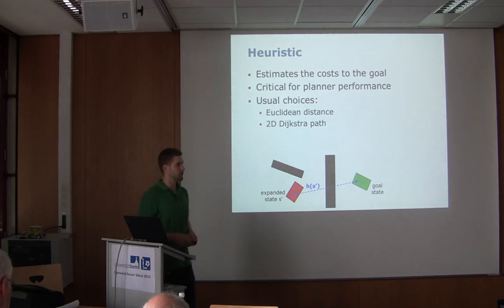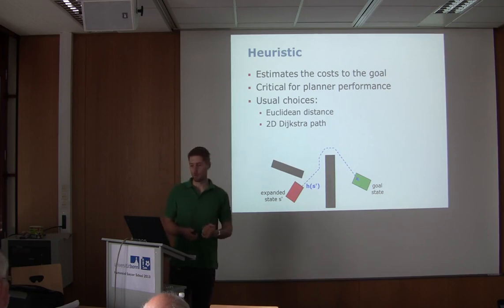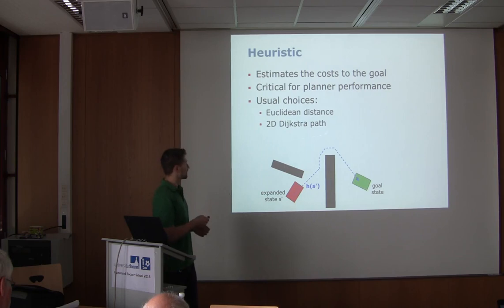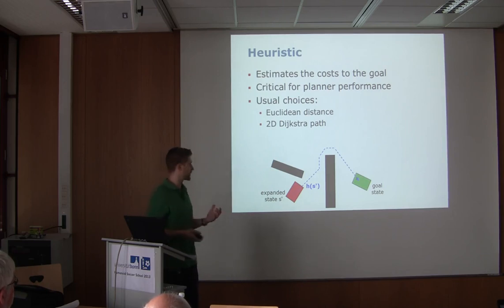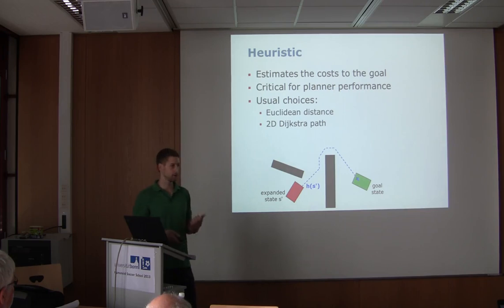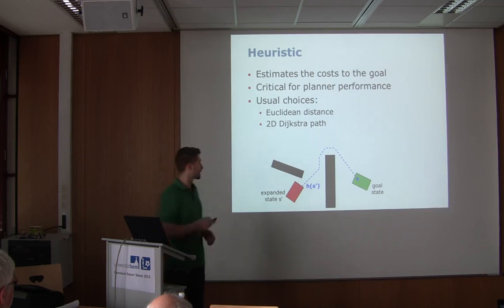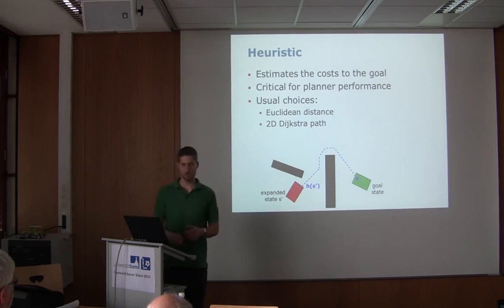Two typical heuristics are critical to planner performance. The Euclidean distance to the goal is commonly used — it just points straight toward the goal. A more informed choice is the 2D path heuristic, computed with Dijkstra on a 2D grid. For every state we pre-compute a 2D path towards the goal — this can be done very fast since it's just a 2D grid without orientation checks. This closely reflects the actual path the robot takes and is more informed.